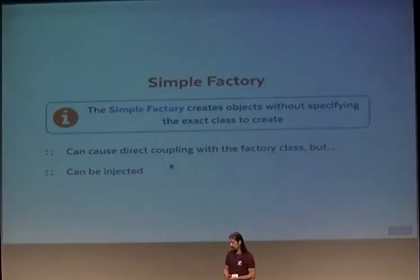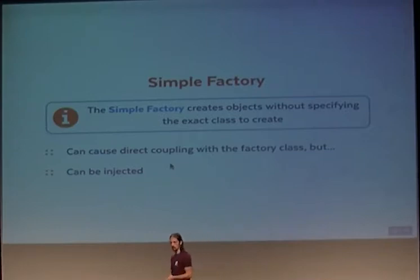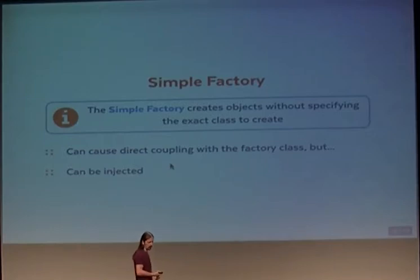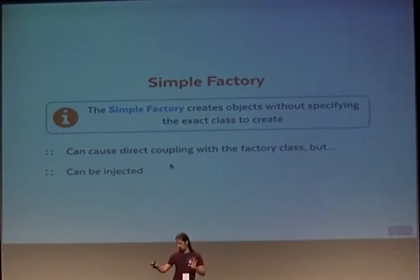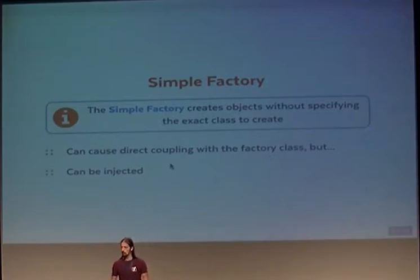The first pattern that moves away from direct coupling is the simple factory. The simple factory is an object whose responsibility is to create other objects. It normally replaces the direct coupling to the instantiated class with direct coupling to the factory instead. However, because the simple factory is an object itself, it can be injected and used indirectly — which is the first benefit.